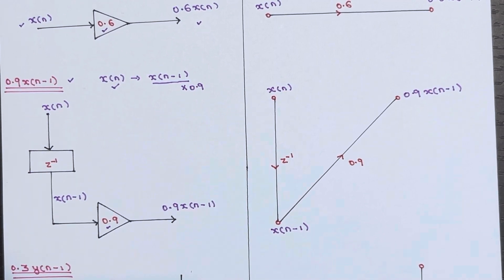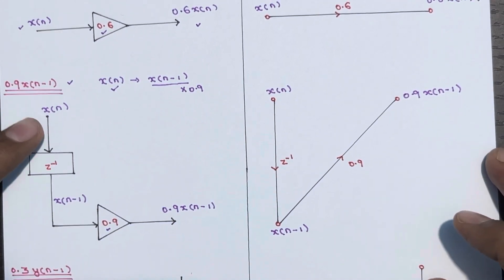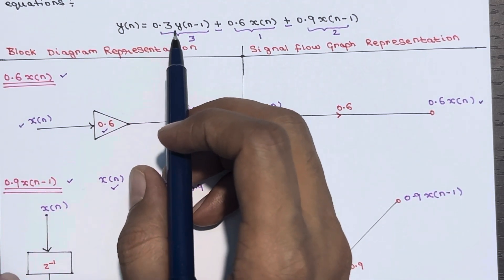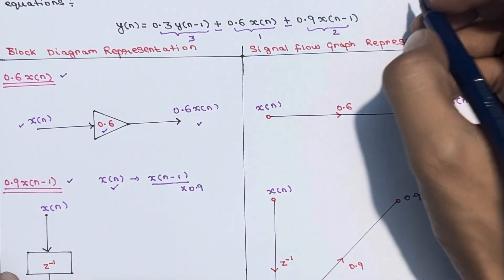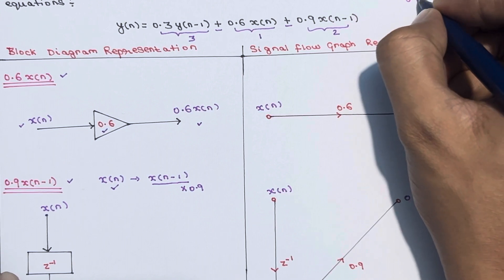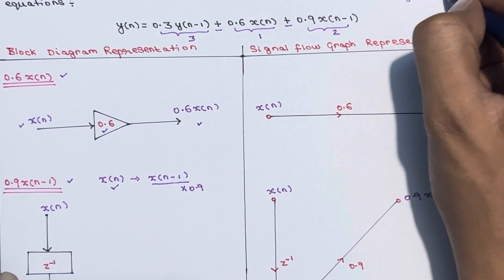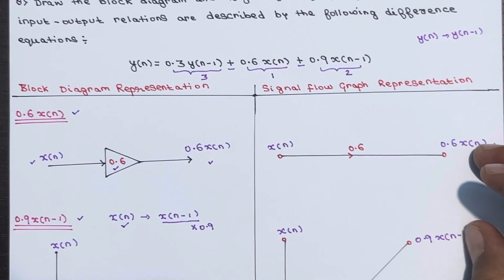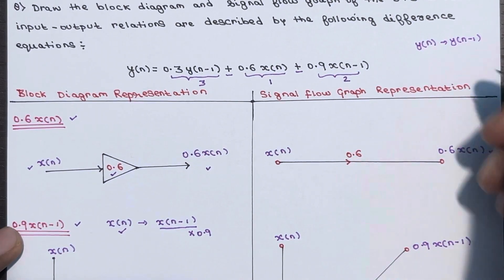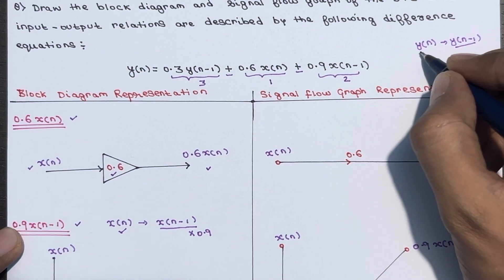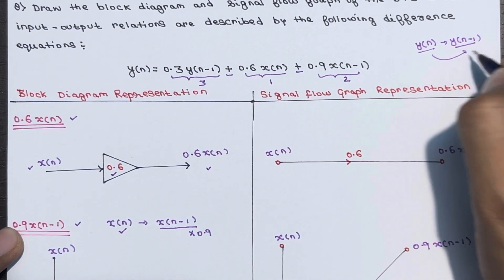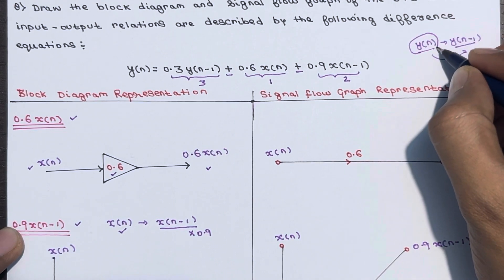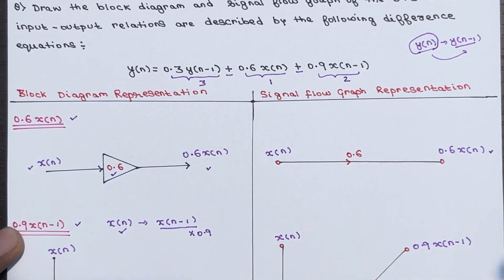The third part is 0.3·y(n-1). The output of the system is y(n), and y(n-1) is a delayed version of y(n) only. So we have to perform an operation on y(n), which is the output of the system.